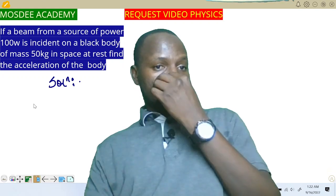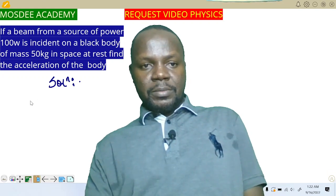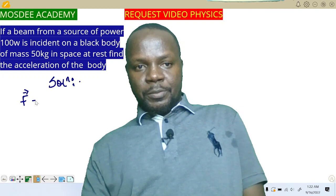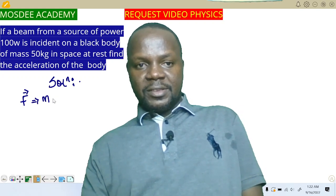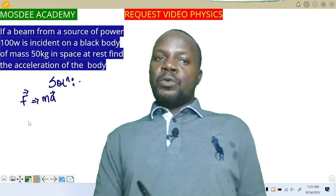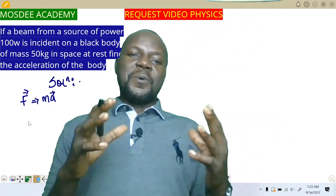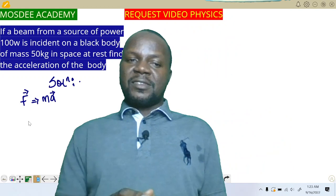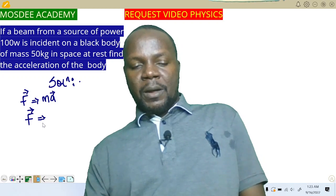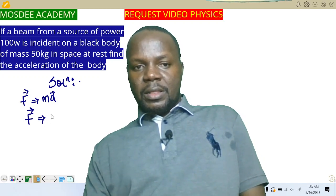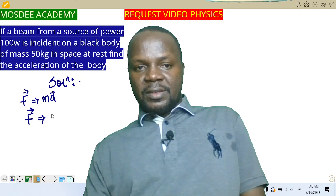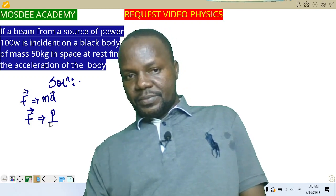We have learned from junior classes that the force acting on a body can be written as F = ma — everybody knows force is a vector quantity, a popular formula from dynamics and mechanics. Similarly, under the concept of work, energy, and power, a force acting on a body can also be written as power divided by velocity: F = P/V.